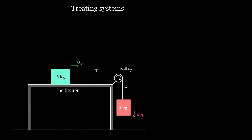Let's figure out the acceleration of the three kilogram mass and the five kilogram mass. There's an easy way and a hard way to do this. I'm going to show you the hard way first — the easy way won't make any sense unless you see the hard way first. Also, the hard way isn't really that hard, and sometimes teachers and professors want to see you do it this way.